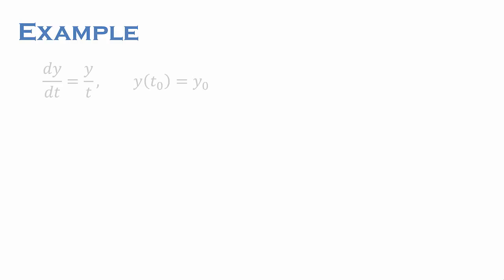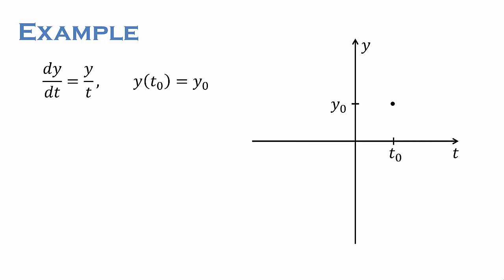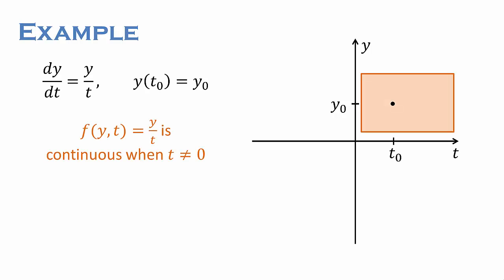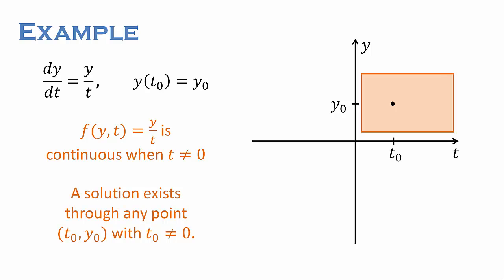Let's look at an example: dy/dt = y/t. For any point (t0, y0) with t0 ≠ 0, the function f(t, y) = y/t is continuous in a rectangle containing (t0, y0). Thus, the existence theorem tells us that a solution exists through (t0, y0). However, f(t, y) = y/t is not continuous — it's not even defined for t = 0 — and thus the theorem doesn't tell us whether any solution exists through points where t = 0.